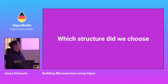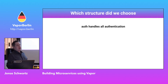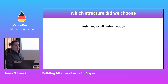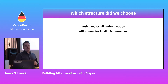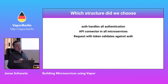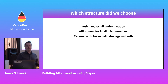Which structure did we choose and why? Basically, we have an auth microservice that handles all authentication. It stores user information, organization details, and all of these things for our Vapor Cloud 2 project. We have an API connector in every microservice — a Swift file for each connection that needs to go out of the specific microservice. Basically you have a Swift file with the endpoints that this microservice needs to contact other microservices, and a request token used to validate the endpoints.